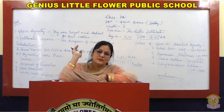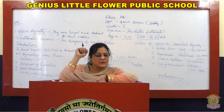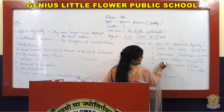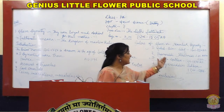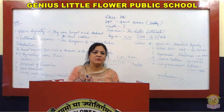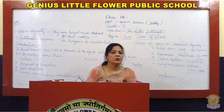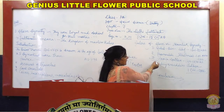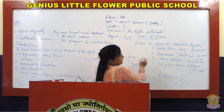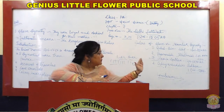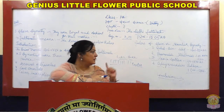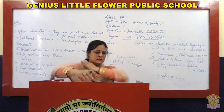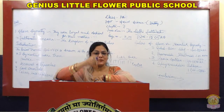Iltutmish died in 1236. After his death, Razia Sultan came into force. She was the first and last female ruler of the Slave Dynasty — and indeed of the Muslim dynasties of Delhi. No woman came into contact for any sultanate after her. Razia Sultan was the daughter of Iltutmish, and that is why she was able to take over the kingdom.